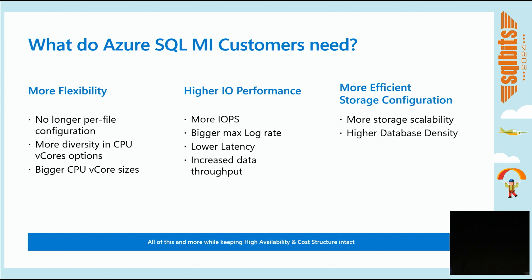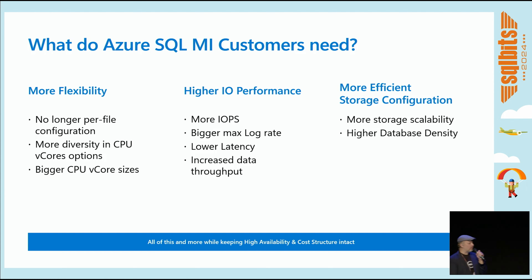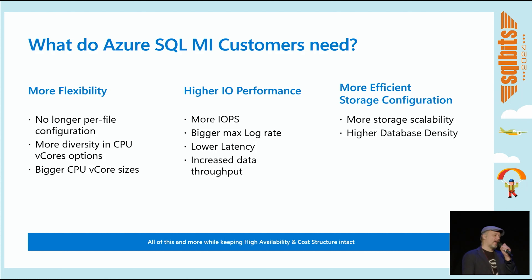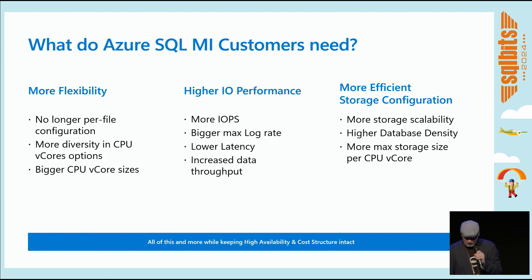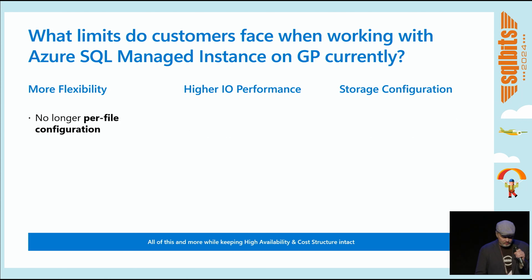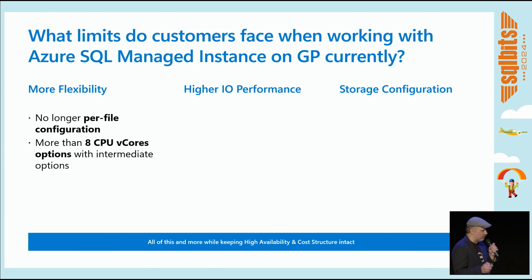Higher database density — any ISVs here? What is the highest number of databases you place on a single SQL Server instance? 88 is a good number. To run within an availability group, it's even more awesome — if you don't care about failover time. And max storage per vCore. Let me throw you some of the current numbers. We have 8 vCore options, 500 megabits per second throughput, et cetera.